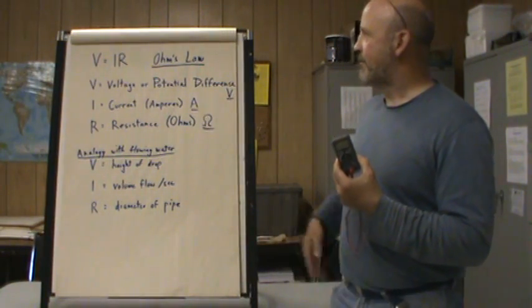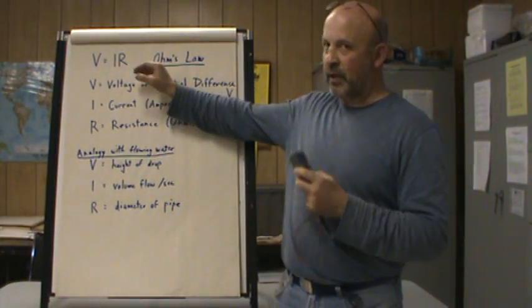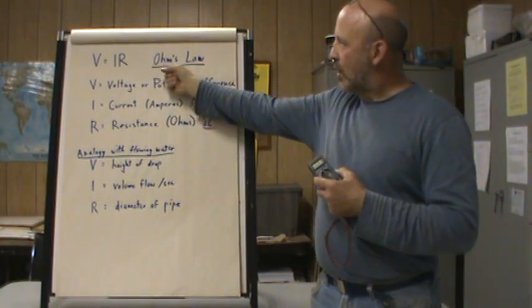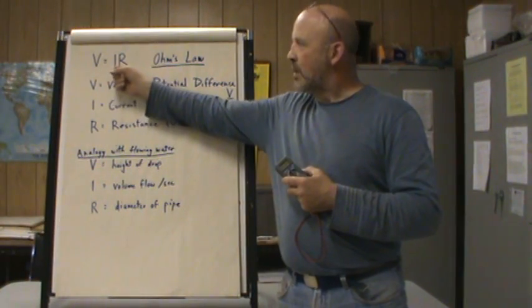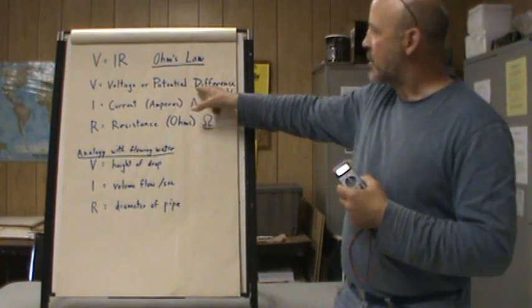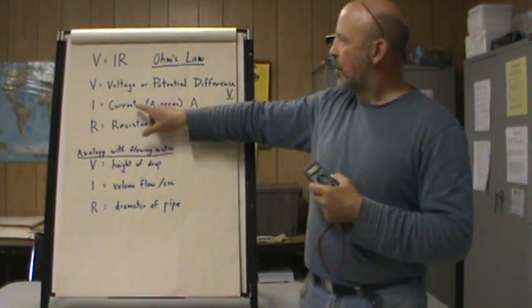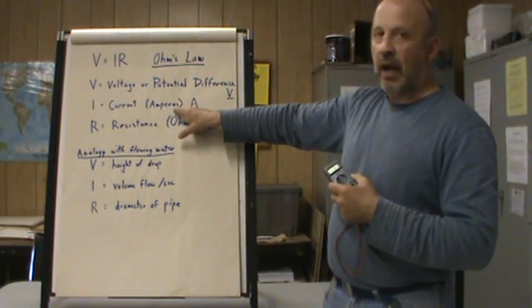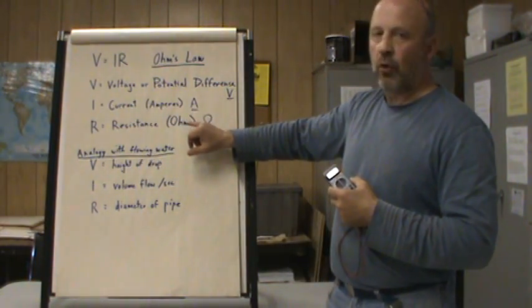The first thing is I just want to discuss the most important aspects of electricity. The most important law or equation that we use is Ohm's law: voltage equals current times resistance. Voltage is also known as potential difference and is measured in volts. Current, which has the symbol I, is measured in amperes or amps, and R or resistance is measured in ohms.